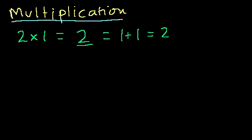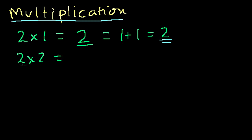What's 2 times 0? That's 0. You don't have to memorize your 0 multiplication tables, because everything times 0 is 0. What's 2 times 2? We're going to add 2 to itself two times, so that's 2 plus 2. And what's 2 plus 2? That's equal to 4.